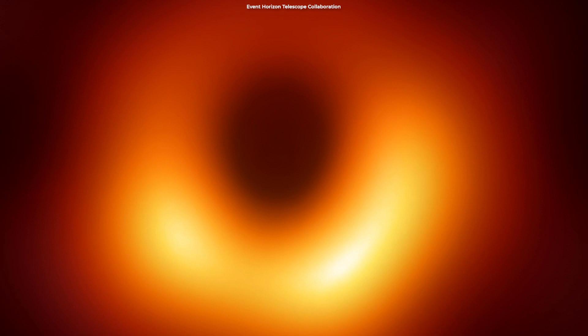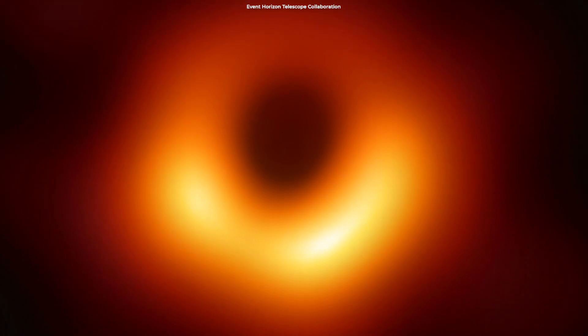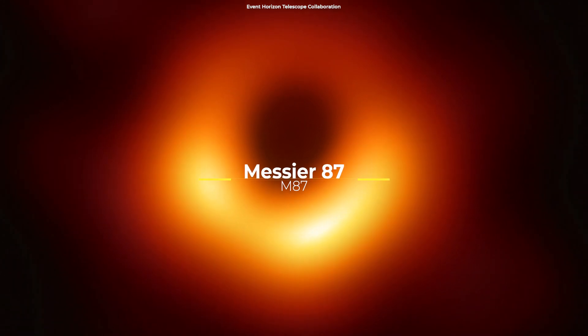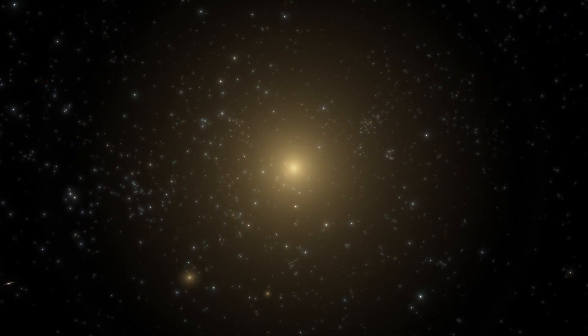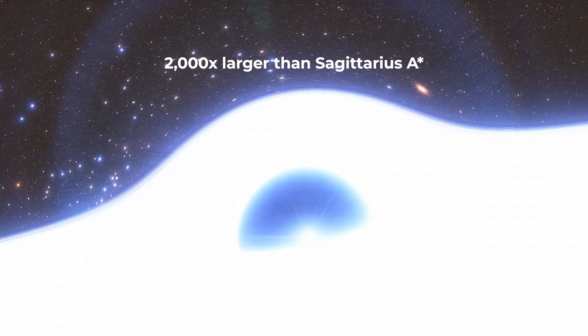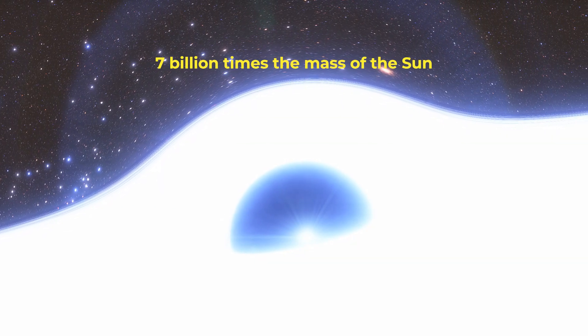In 2019, the Event Horizon Telescope team released the first image of a black hole, this one at the center of galaxy M87. The black hole at the center of this galaxy is a behemoth 2,000 times larger than Sagittarius A and 7 billion times the mass of the Sun.